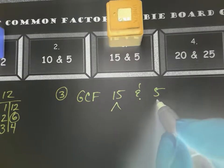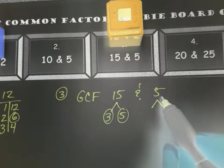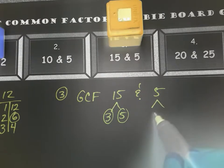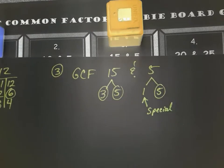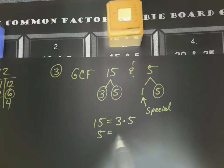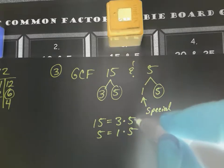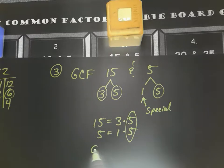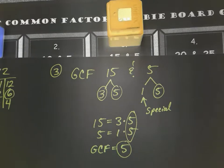Let's try a different strategy — a factor tree — to show that both methods work. For fifteen, that's three times five, and both are prime. For five, it's already prime; if I had to show something I could write one times five, but I won't circle the one. Lining up the factorizations: fifteen is three times five, and five is one times five. They both share a bundle of fives, so the Greatest Common Factor is five.